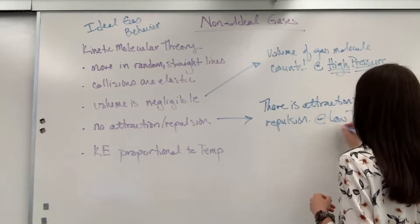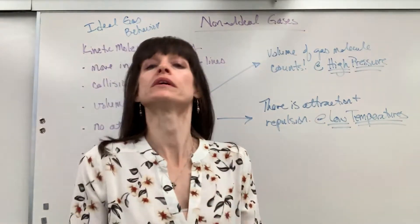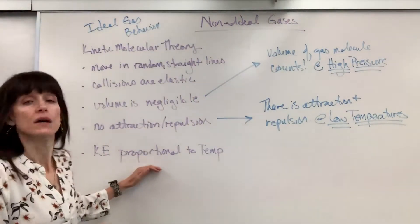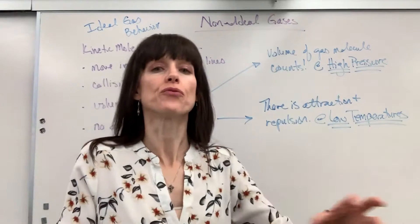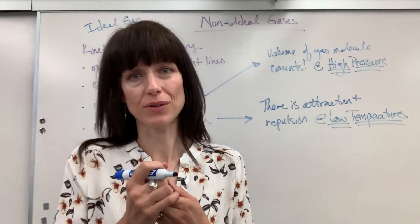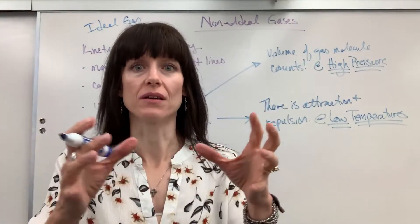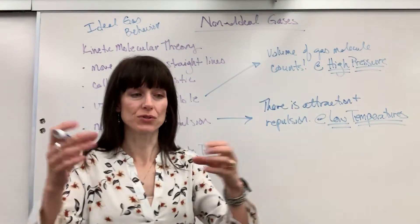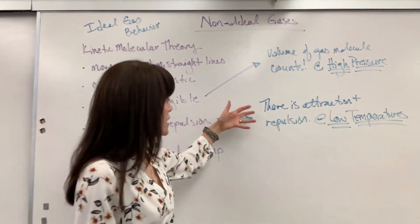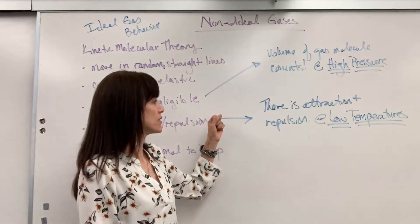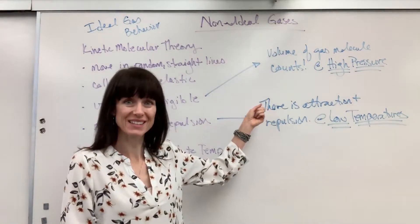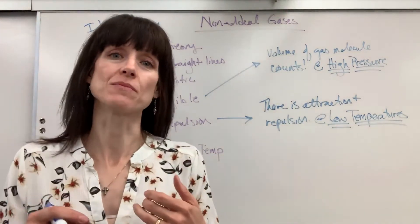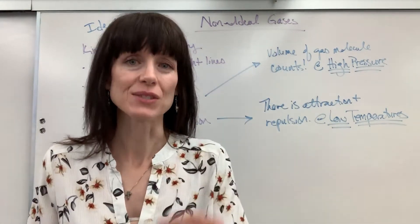Think this through: we decrease the temperature. Kinetic energy is directly proportional to temperature, so if we decrease the temperature, the gas molecules slow down. If they move slower, they have time to attract and repel one another. On a test or assignment, you have to give both the statement and the why. So for non-ideal gas behavior, we say that gas molecules can have attraction and repulsion at low temperatures.